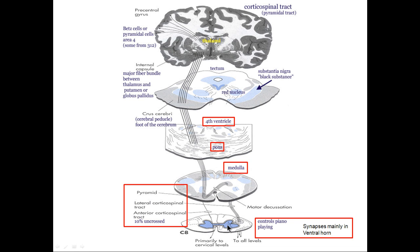These are also called anterior horn cells. The corticospinal tract controls piano playing and other fine digital movements — detailed movements of the hand, forearm, feet, and toes. These fibers synapse mainly in the ventral horn.